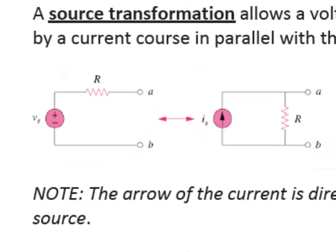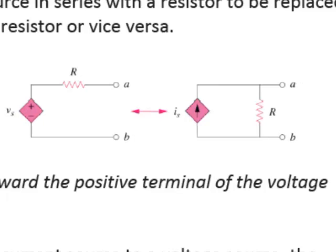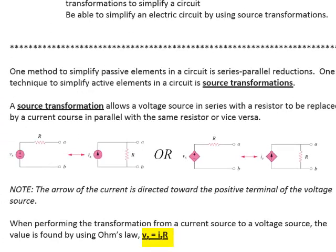A source transformation is valid when you have a voltage source in series with a resistor. When you have this configuration, you can do a source transformation to change it to a current source in parallel with a resistor. Notice that this works for independent and dependent circuits. If you have a voltage source with a positive on top and a negative on the bottom, when you transform it to a current source, the arrowhead points in the direction of the positive terminal on the voltage source. The relationship between the voltage and the current in the source transformation is Ohm's Law.